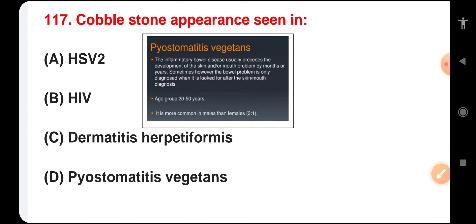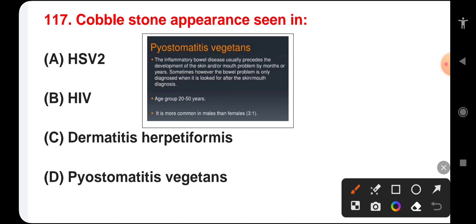Cobblestone appearance seen in HSV-2, HIV, dermatitis herpetiformis, or pyostomatitis vegetans. Cobblestone appearance is mostly seen in bowel diseases like Crohn's disease. The correct answer is pyostomatitis vegetans because it is an inflammatory bowel disease that usually precedes development of skin or mouth problems by months or years. It occurs at ages 20 to 50 years and is more common in males than females.